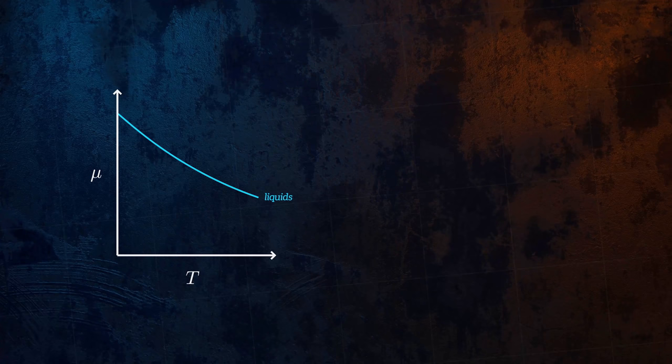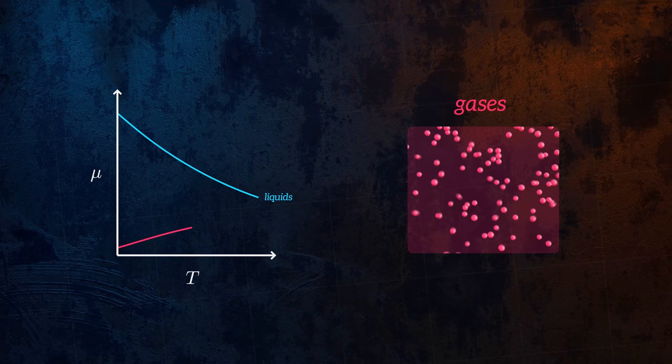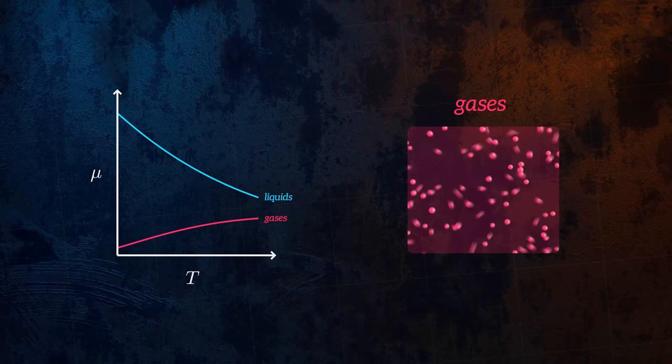But temperature has the opposite effect in gases. Viscosity increases with increasing temperature, because the higher temperature means that gas molecules have more random motion, which results in more intermolecular collisions.